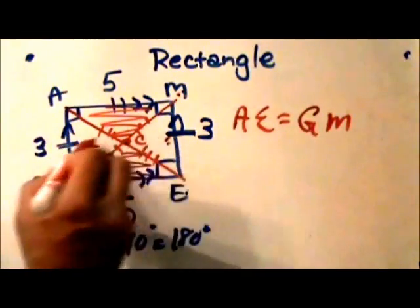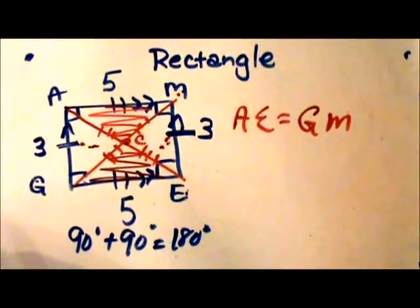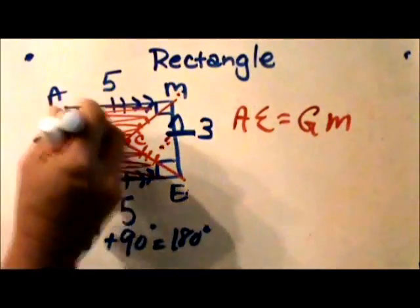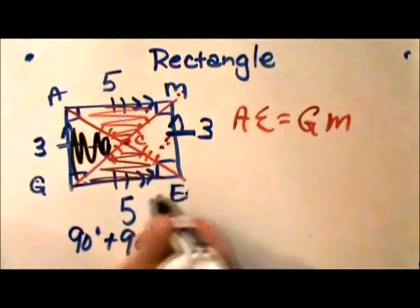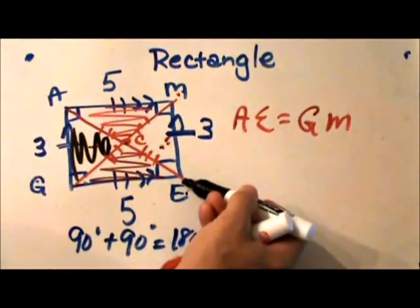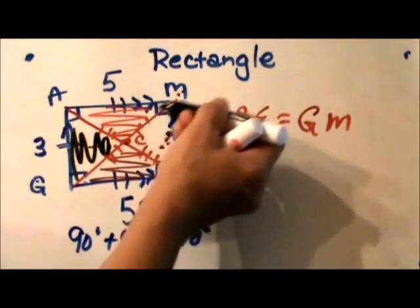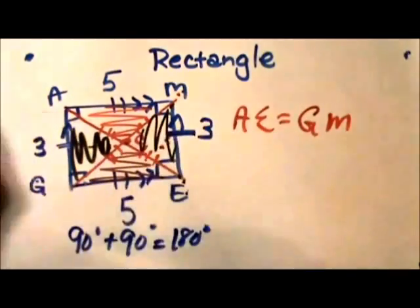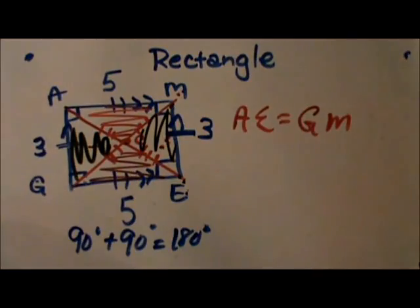And then these two triangles on either side are also congruent to each other. So A, C, G, this triangle over here, I'm going to shade in black, is congruent to E, C, M, this triangle over here. So those are all the properties of rectangles. I hope this video was helpful.